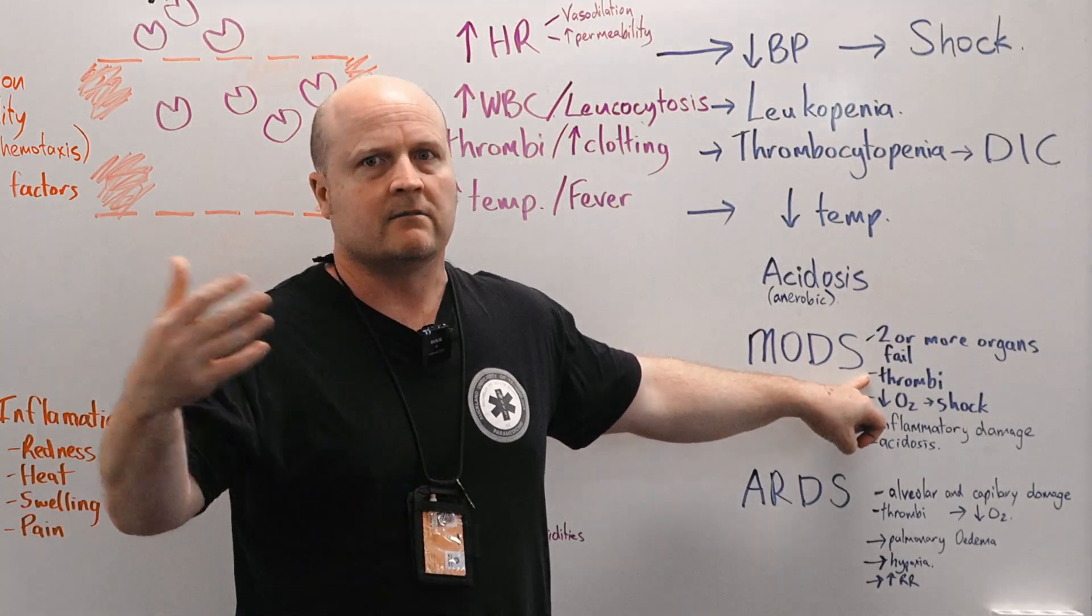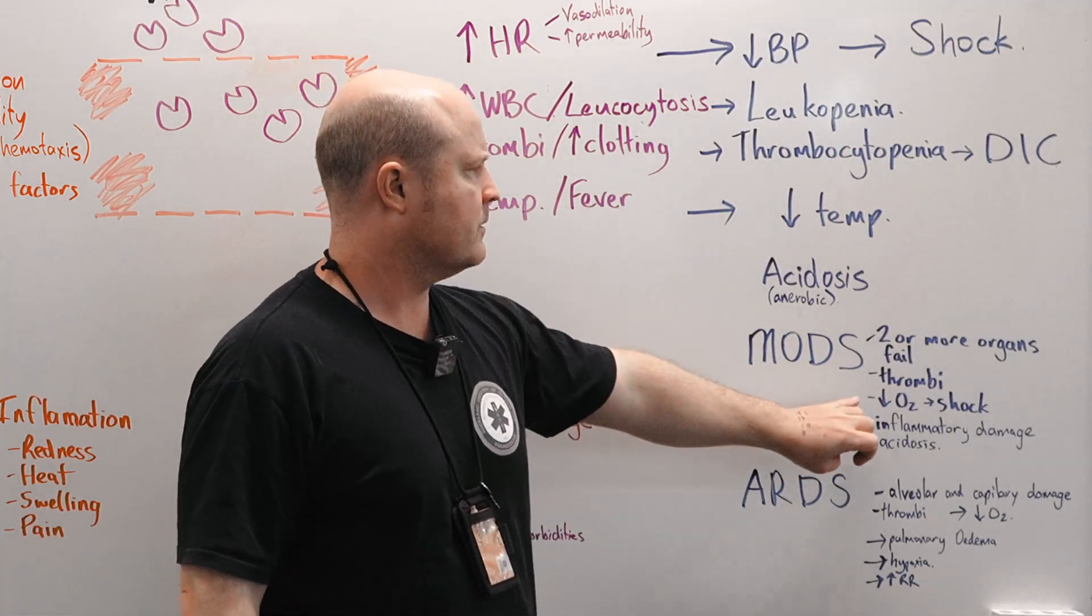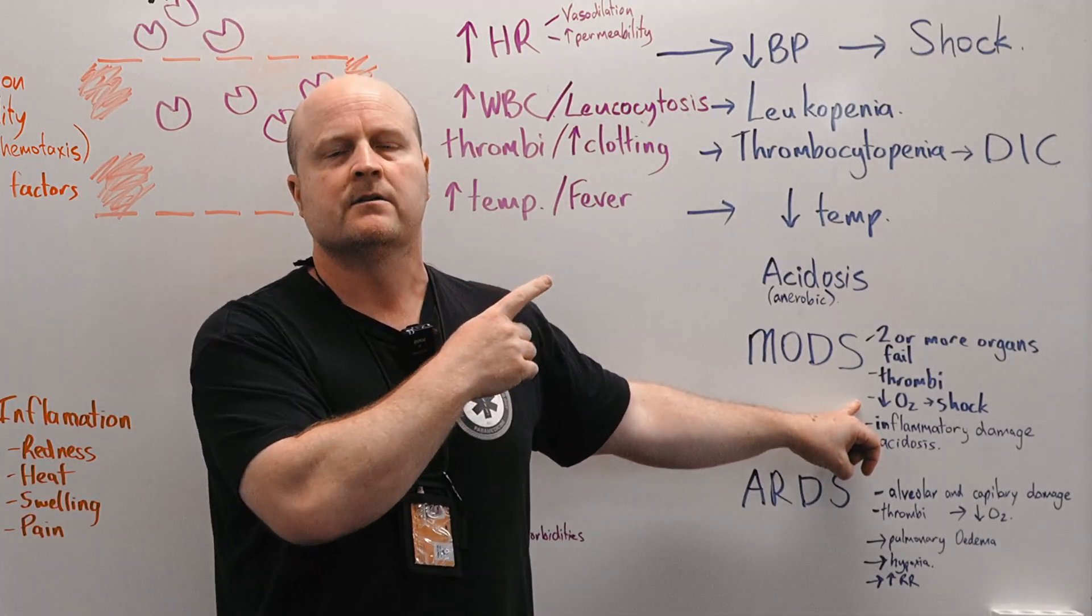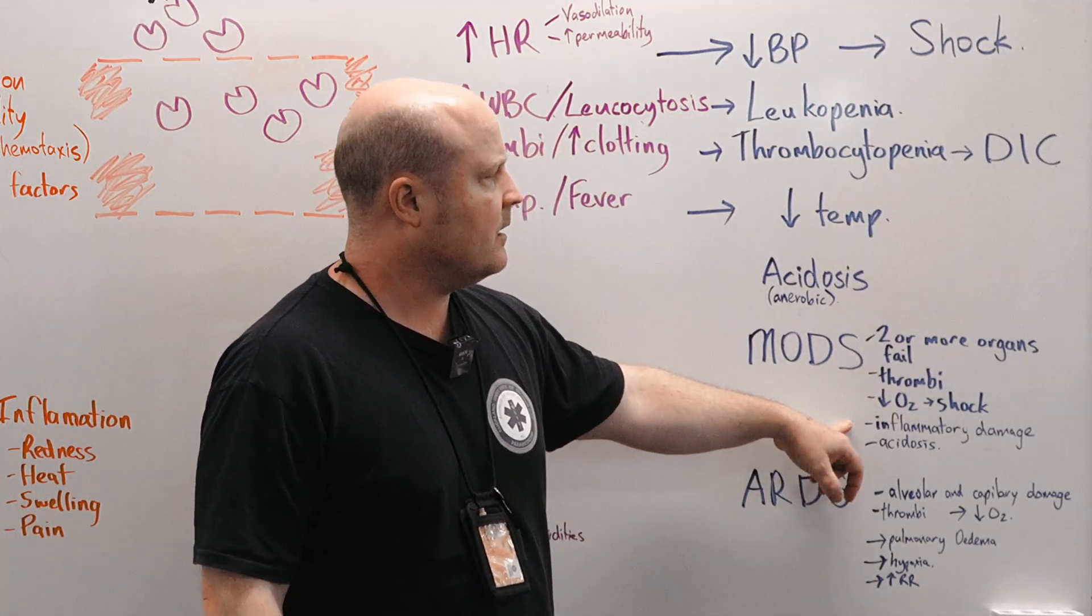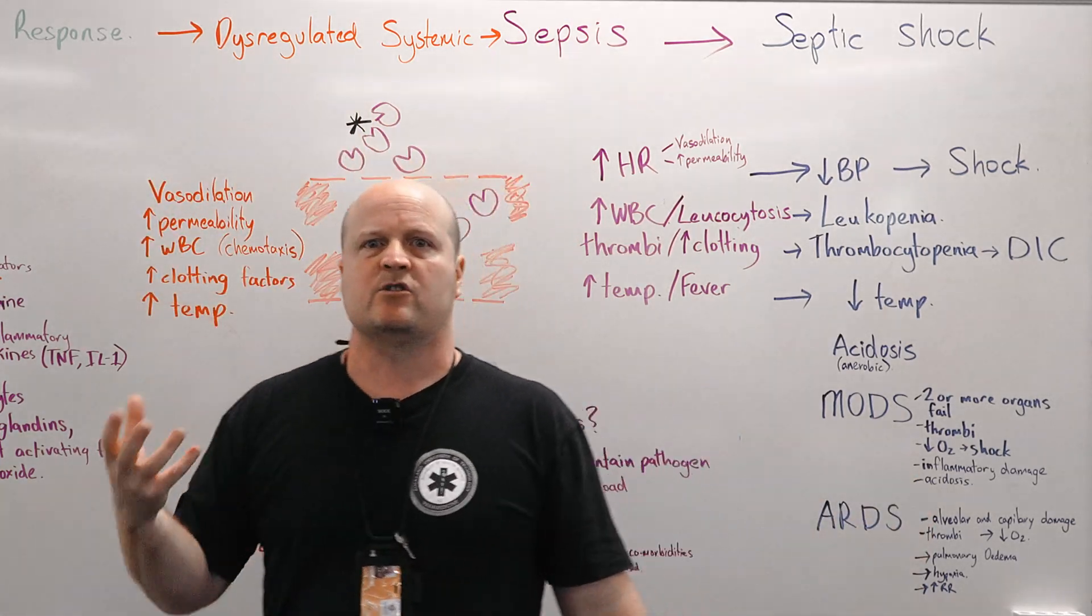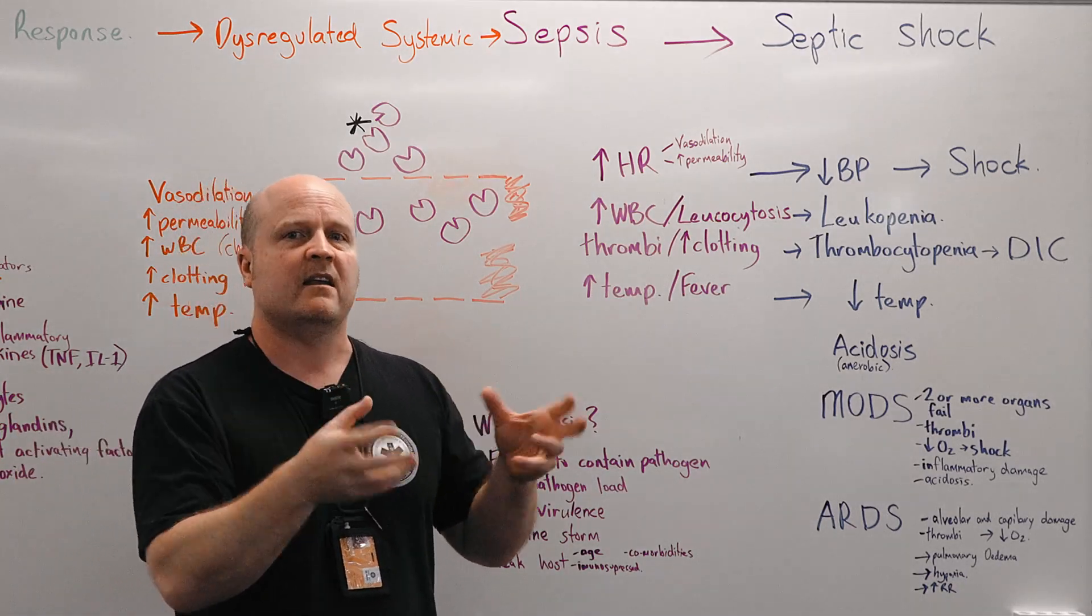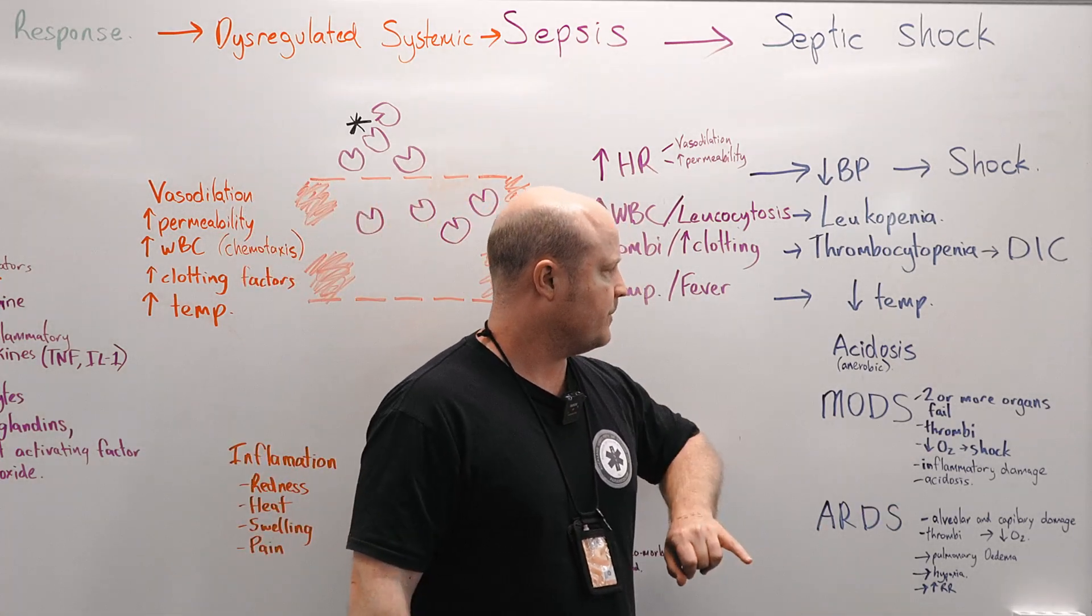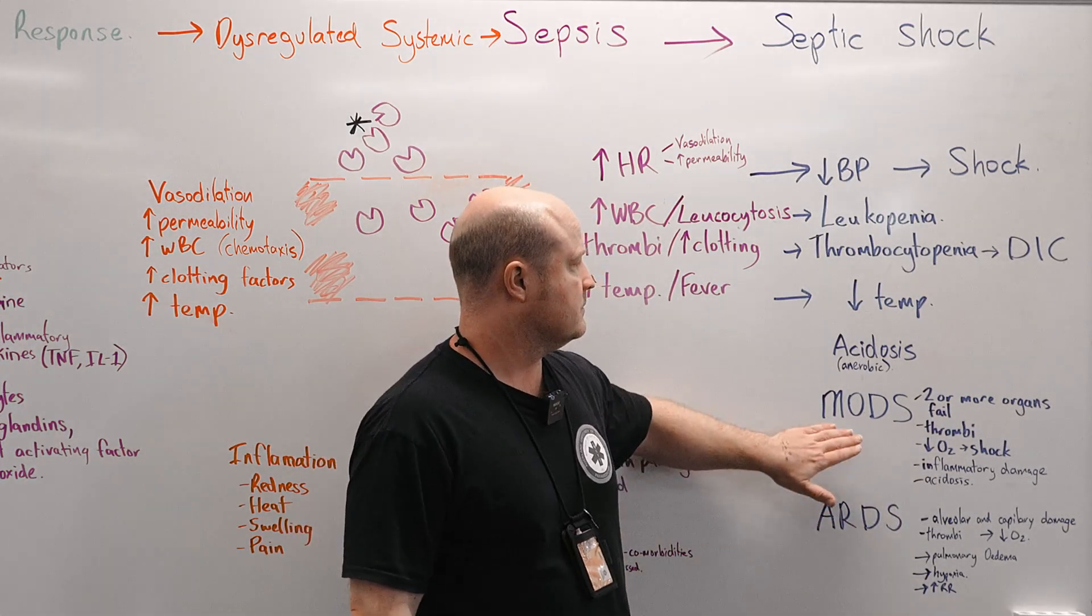Remember we've got decreased oxygen transport because we're in shock. So our organs need oxygen. So they're going to start to fail. The inflammatory process itself, all these white blood cells, all this inflammation, its job is to destroy the pathogen. But if we've got inflammation everywhere, that inflammatory process is going to start to destroy our own tissue as well, leading to MODS. And of course, acidosis is going to start causing organ damage as well. So that's MODS.